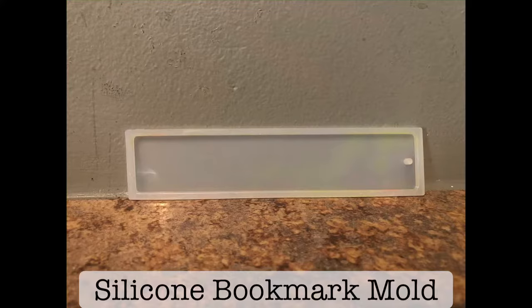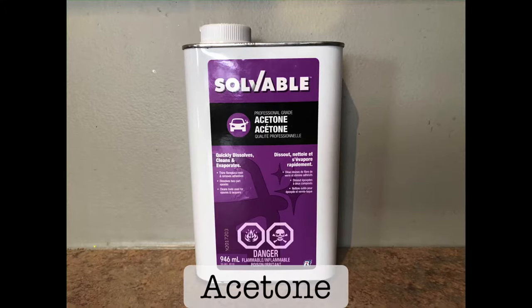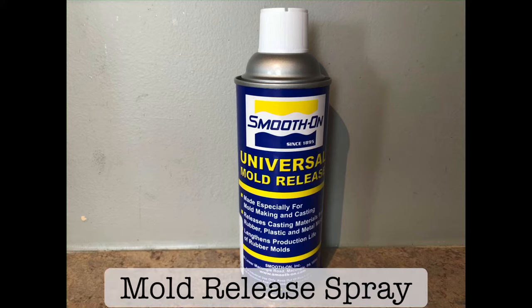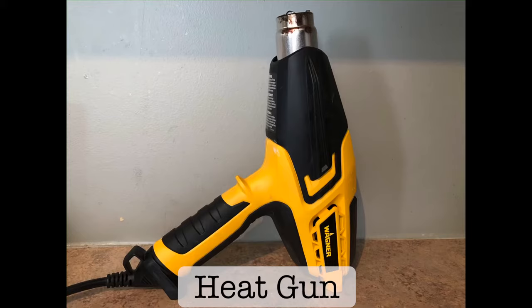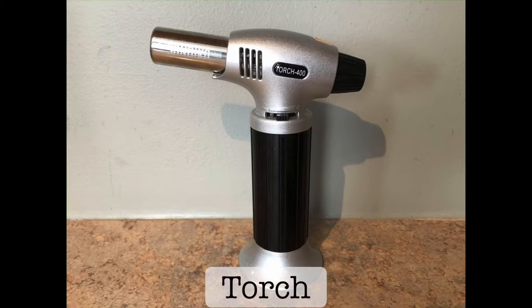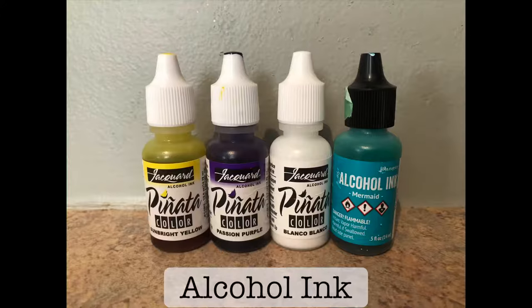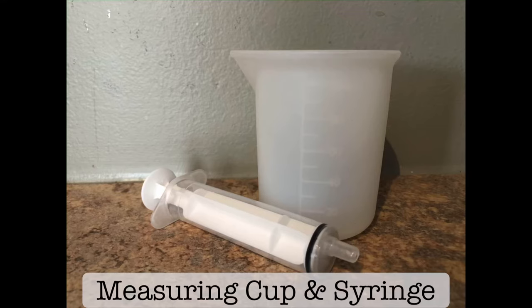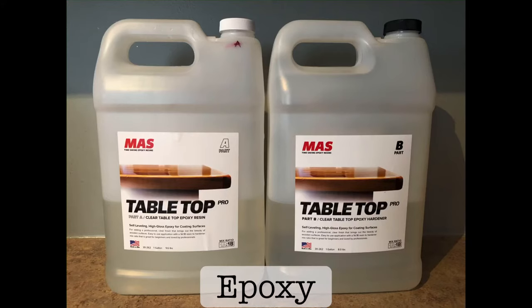Some supplies to start off with: your silicone bookmark mold of course, acetone for cleaning your molds, mold release spray to prevent epoxy from sticking to your silicone mold, a heat gun for air bubbles, a torch also for air bubbles, alcohol ink which you'll use to make the design, a measuring cup and syringe to measure your epoxy, and the epoxy. Today I'm going to be using Moz tabletop brand epoxy.